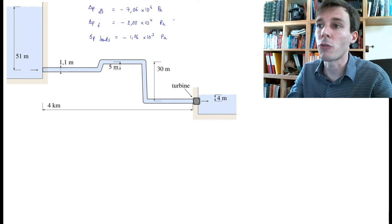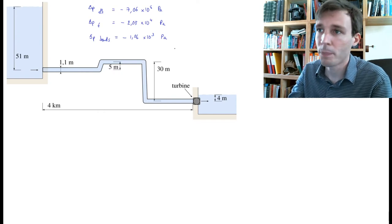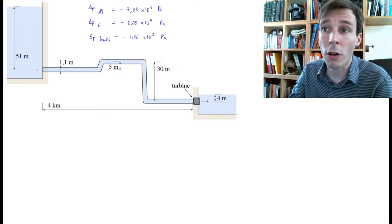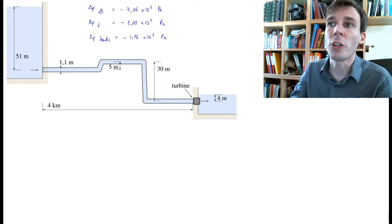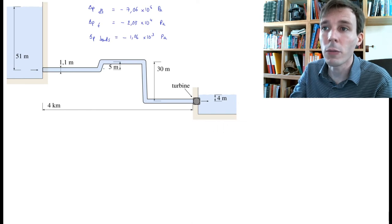Here we have a pressure drop due to hydrostatic pressure that's about seven bars. We also calculated that there were friction losses inside the pipe which amounts to about 0.2 bar.